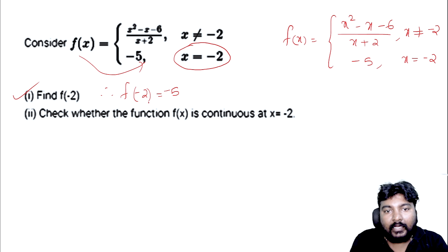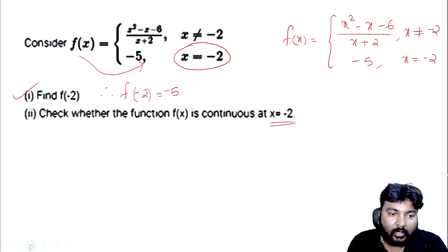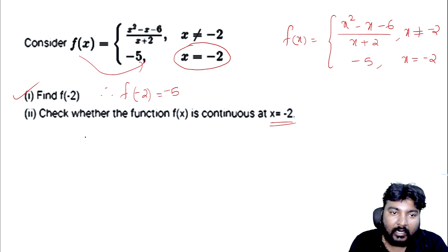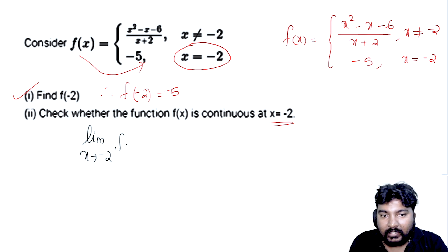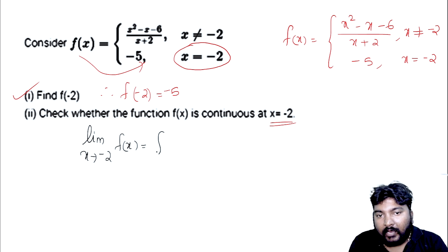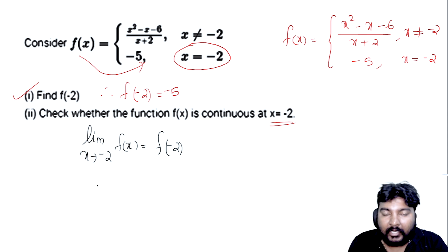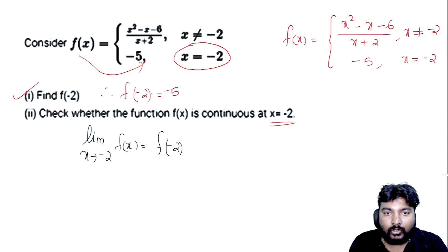This is a very important collection of questions. The function is continuous on an interval. The condition is: limit as x tends to minus 2 of f(x) equals f(minus 2), and f(minus 2) is equal to minus 5.